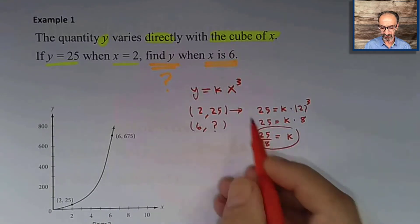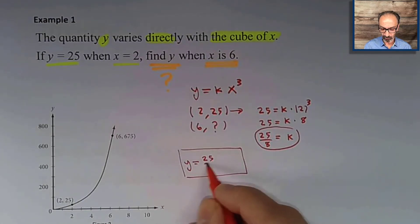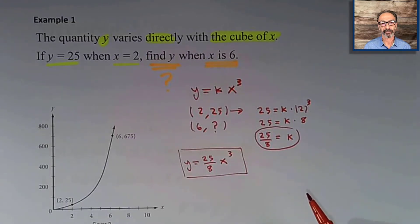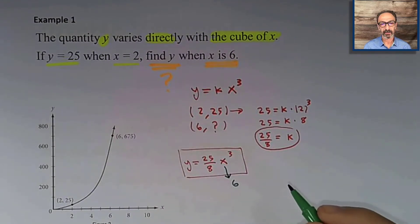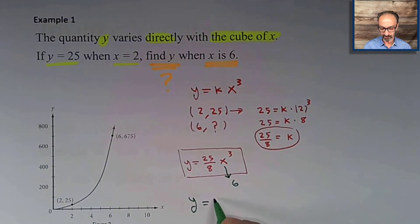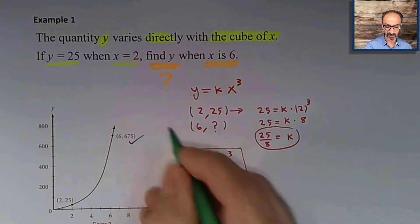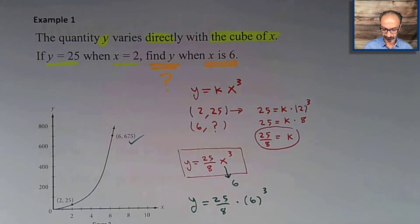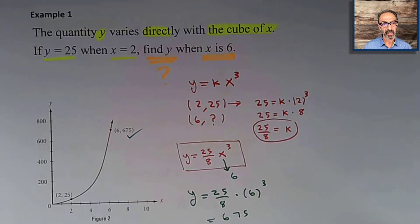That is the constant of variation. Now to solve for y, I use k = 25/8 in the equation, so the formula becomes y equals 25 over 8 times x to the power 3. Plugging in 6 for x: y equals 25 over 8 times 6 to the power 3. Evaluating that gives y equals 675. The graph shows a direct variation — from point to point it's a curve that increases, not a straight line.